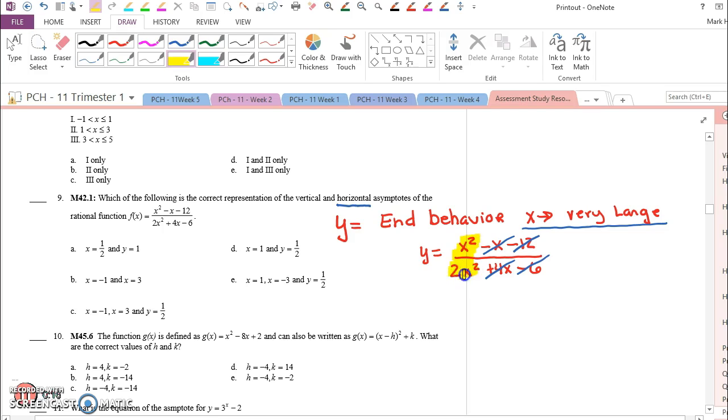And when I look at the leading term, we have y equals x squared over 2x squared. The x squareds cancel out, and I really just have y equals 1 half. So that's part of it. It could only be this one, this one, or this one.